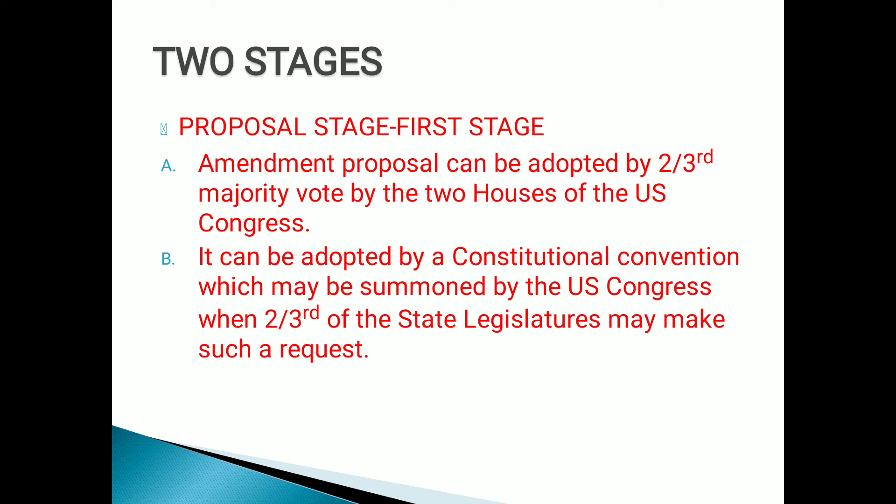What is the proposal stage? Any proposal for amending the US constitution can be made by two alternative methods. An amendment proposal can be adopted by a two-thirds majority vote by the two houses of the US Congress, each house voting separately. Or an amendment proposal can be adopted by a constitutional convention which may be summoned by the US Congress when two-thirds of the state legislatures make such a request.